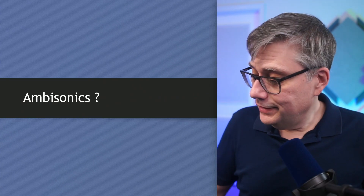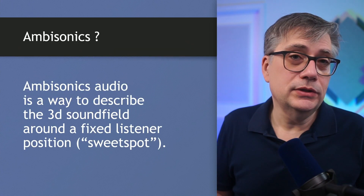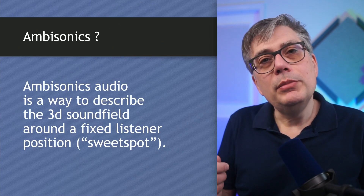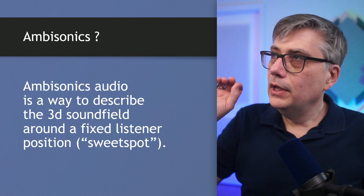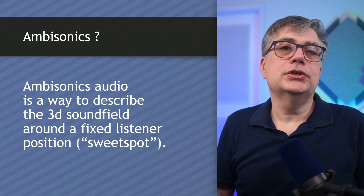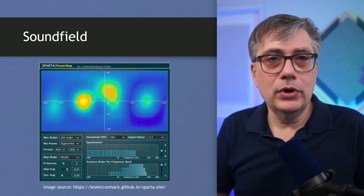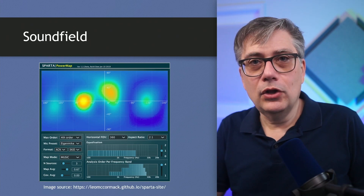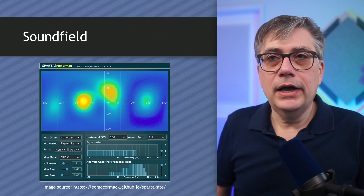Let's start with Ambisonics. In essence, Ambisonics is a way to describe the three-dimensional sound field around a fixed listener position, sometimes also referred to as the sweet spot. Essentially, for each direction — each longitude and each latitude — we try to capture the amount of sound coming from that particular direction toward the listener. This can be visualized through a heat map or power map, giving some indication of how much sound is coming from a given direction.